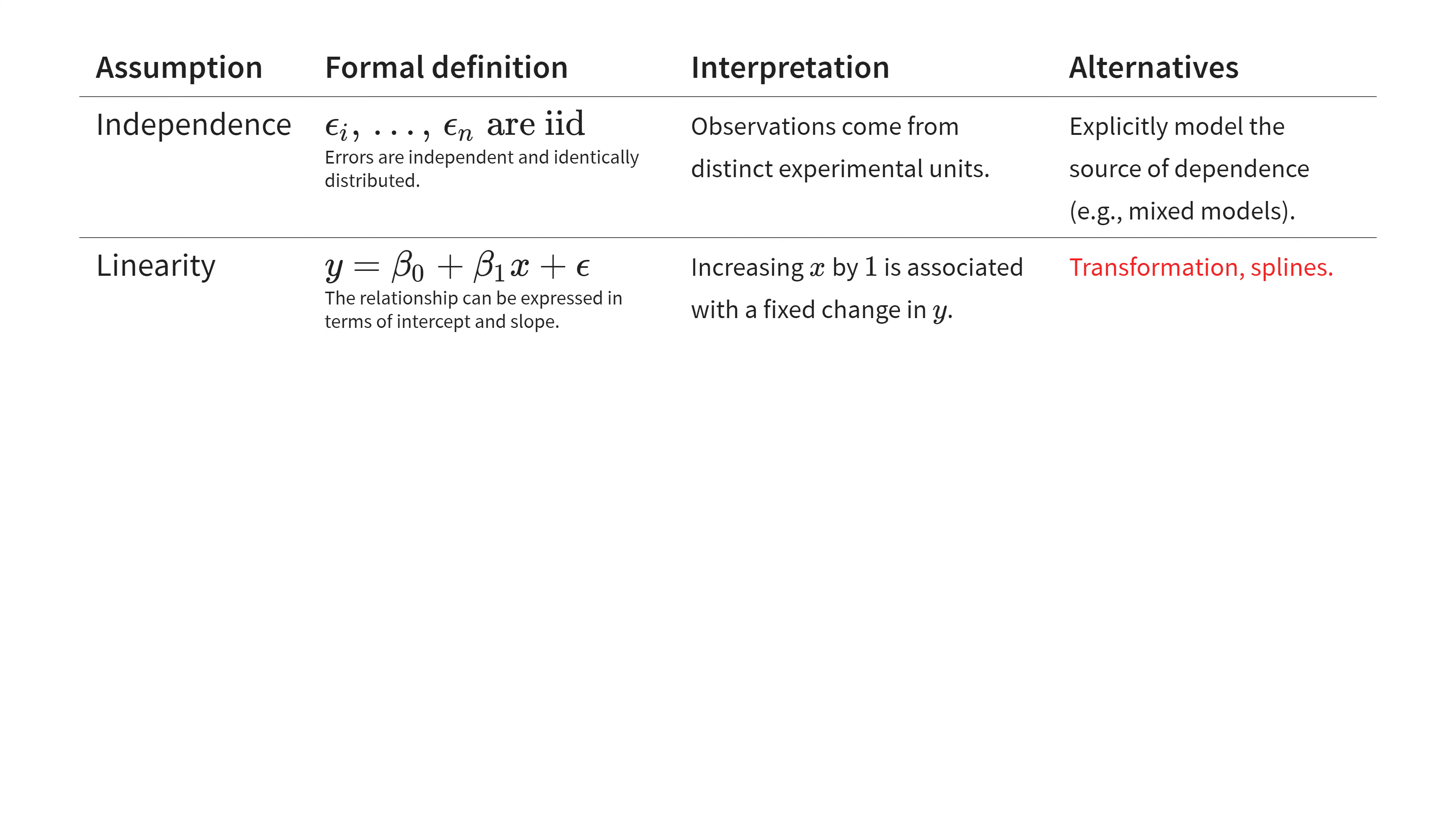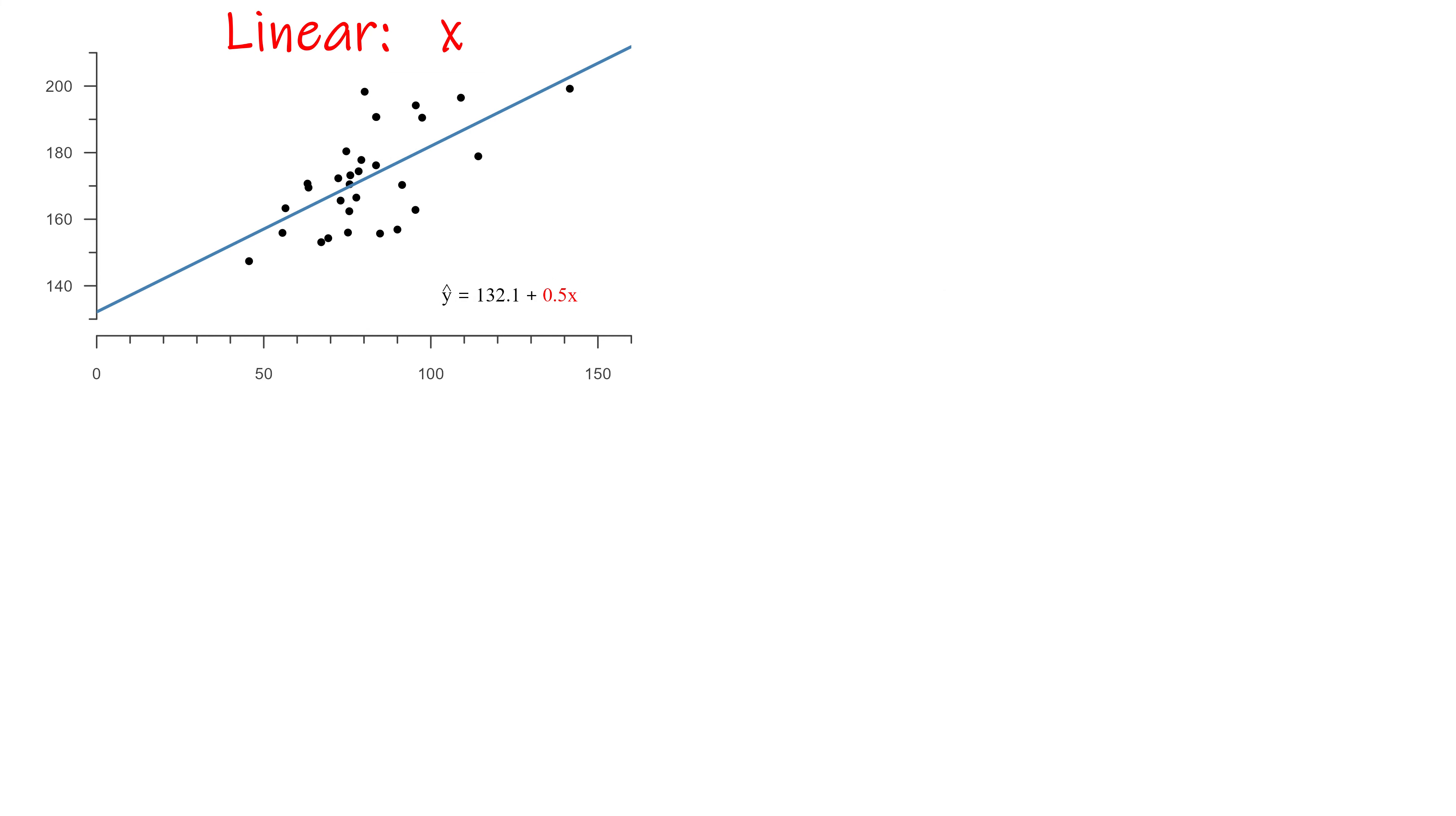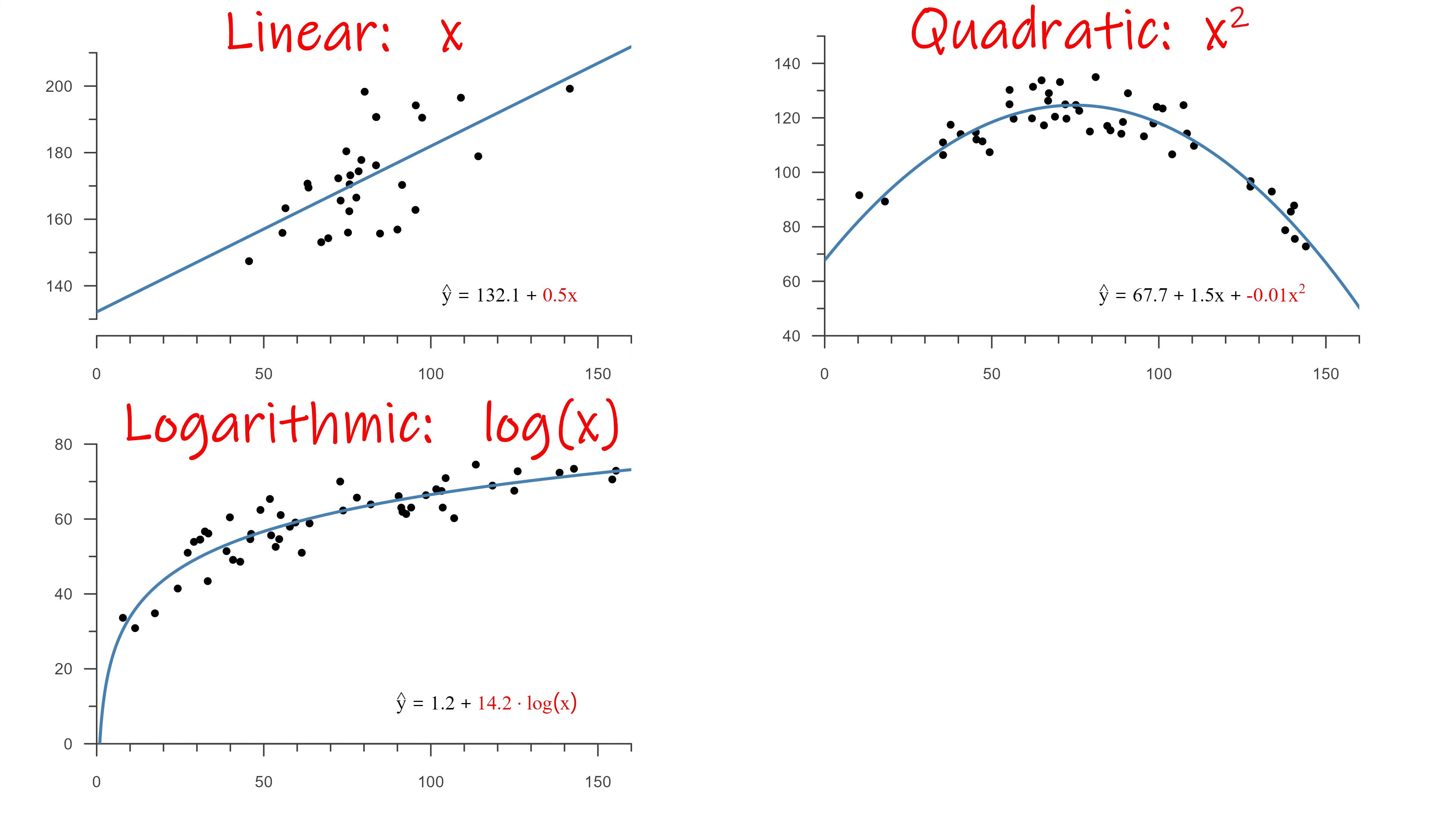If this assumption is not reasonable, we have to add a non-linear term to our model, like a quadratic term or a logarithmic term, which is called transformation, or by using a flexible non-linear function, like a spline.